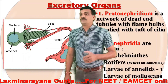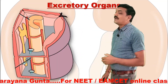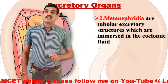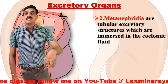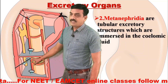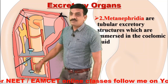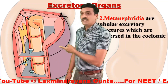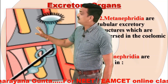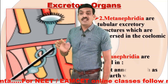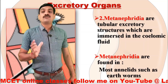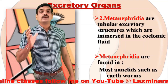Coming to the next type of excretory organ — metanephridia. These metanephridia are tubular excretory structures immersed in the coelomic fluid. Metanephridia are found in most annelids such as earthworms and are the excretory organs in annelids.